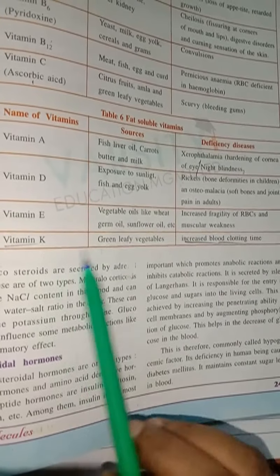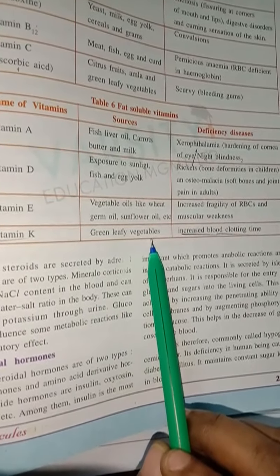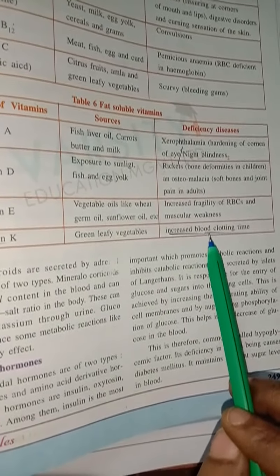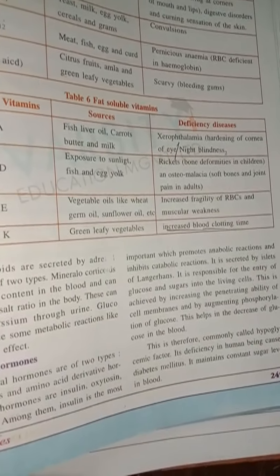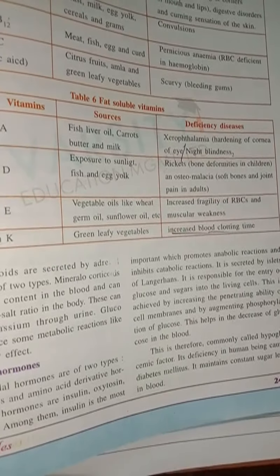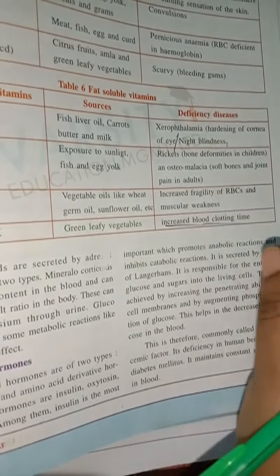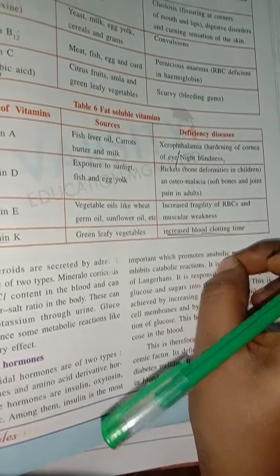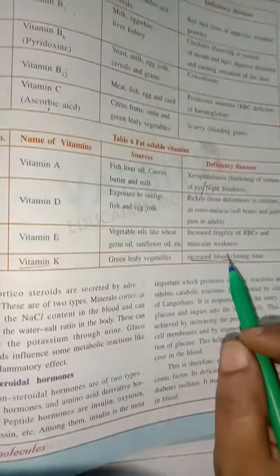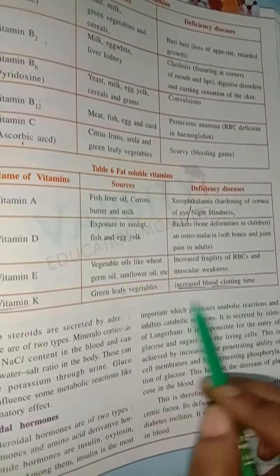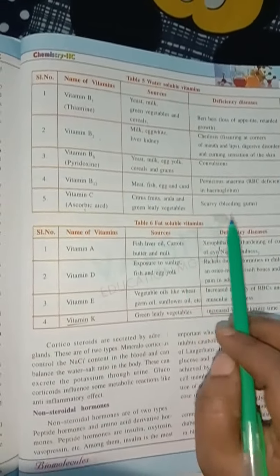Vitamin K is present in all green leafy vegetables. Deficiency of vitamin K causes increased blood clotting time — when a person lacks vitamin K, bleeding will not stop quickly and clotting does not take place in time, resulting in greater blood loss. These are the water-soluble and fat-soluble vitamins covered in this session.